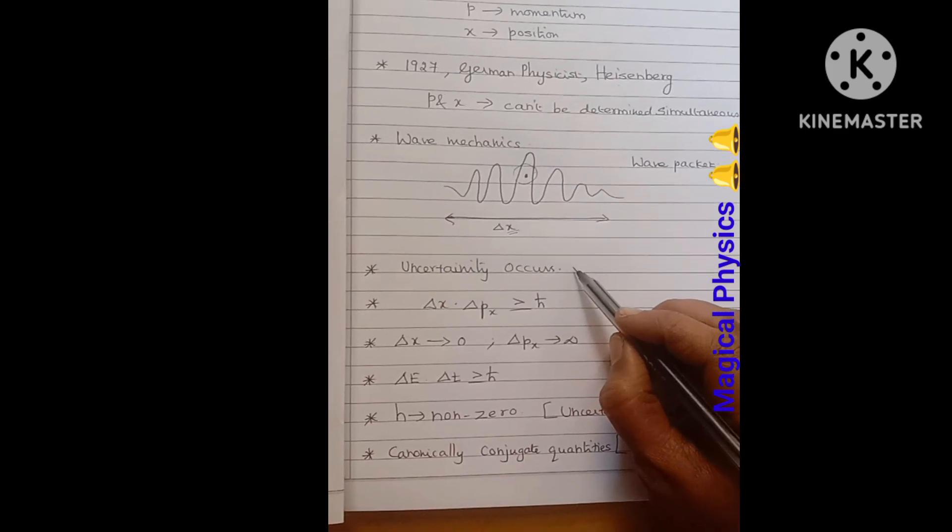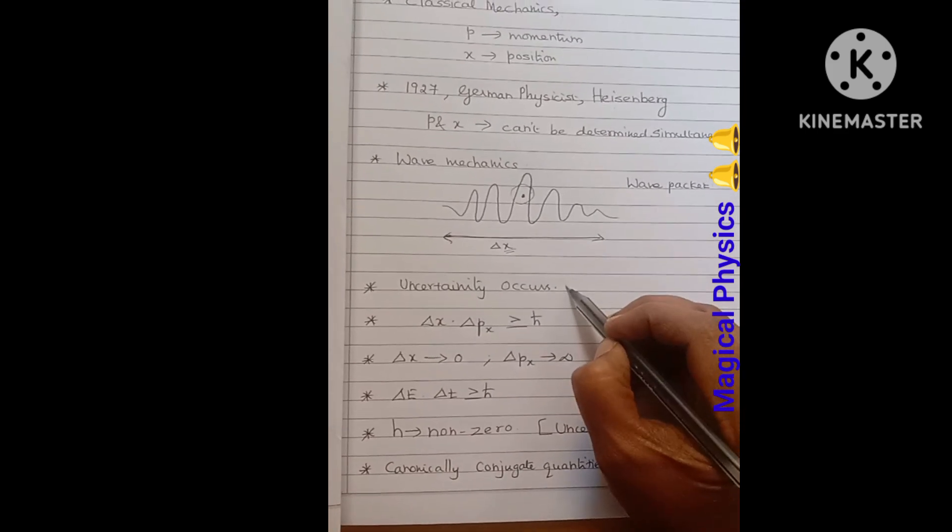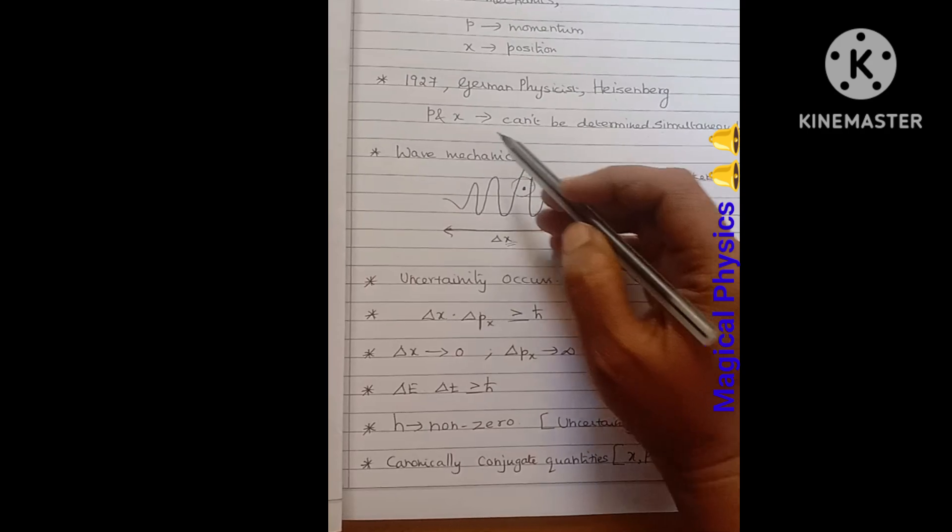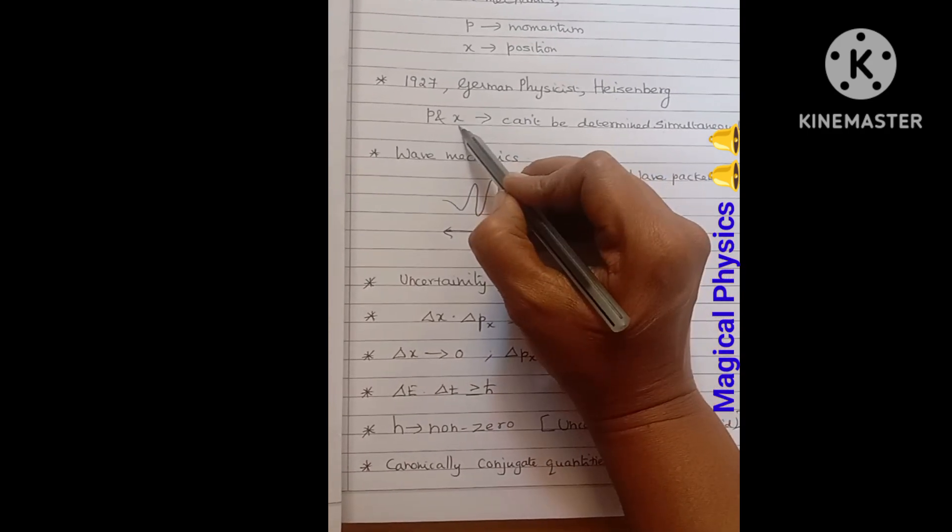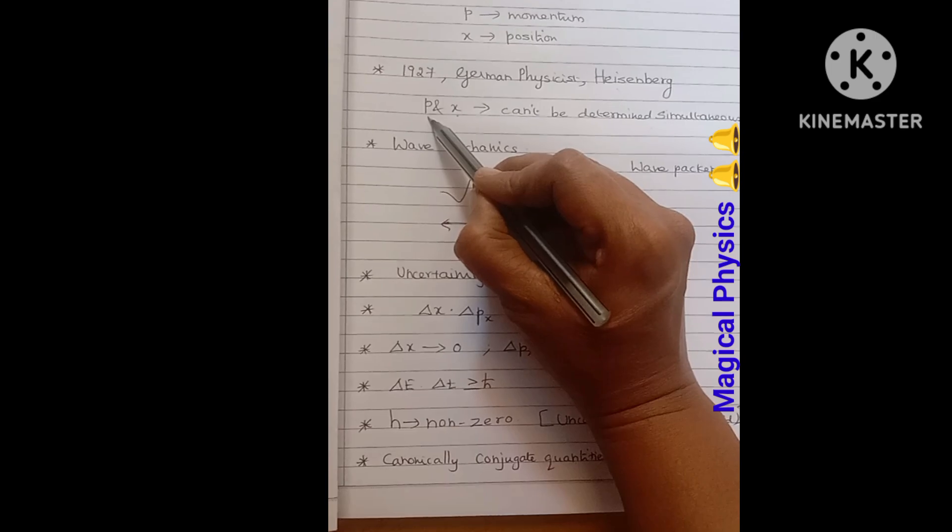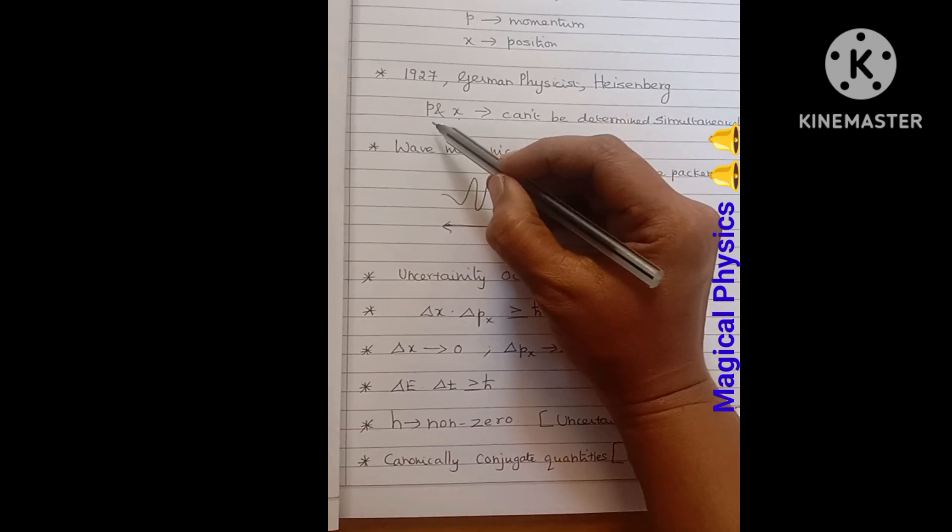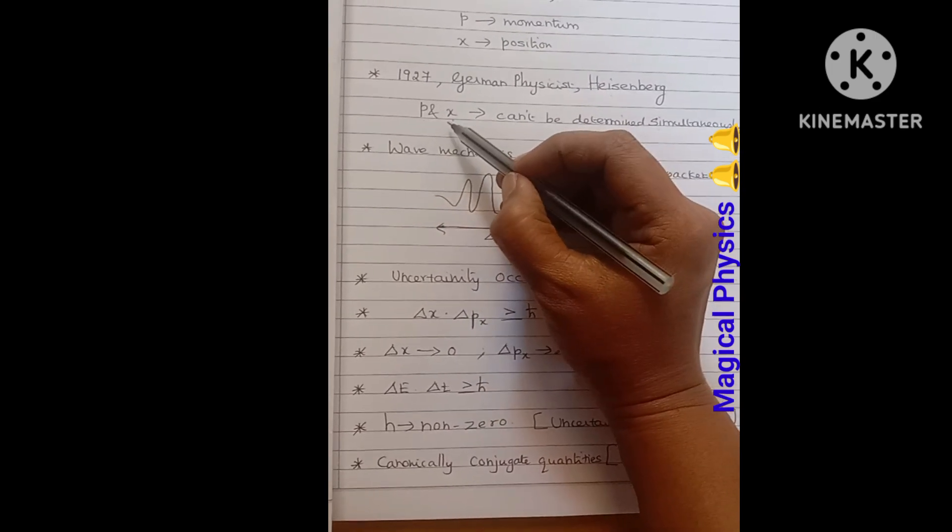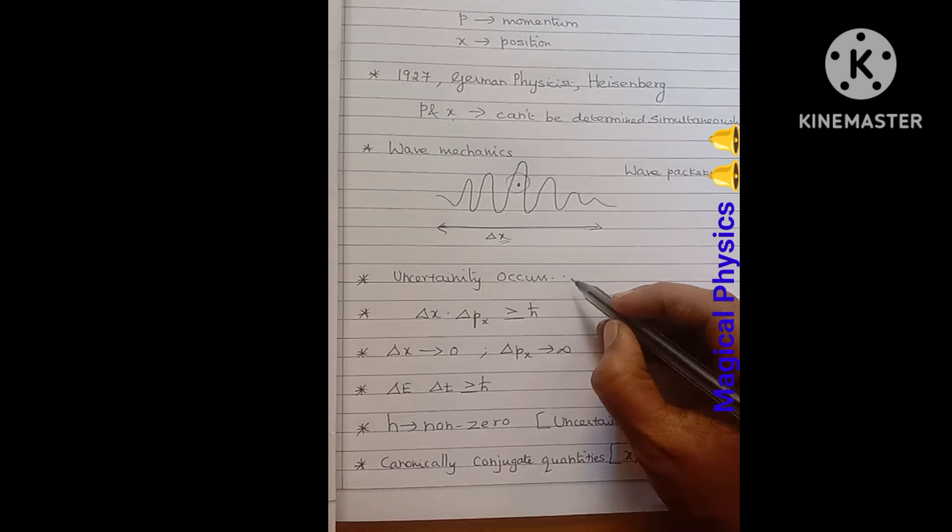According to his concept, an uncertainty occurs. That means if we are able to predict this location, we cannot tell about the momentum term. Likewise, vice versa. If we say about this momentum, we can't predict the location.